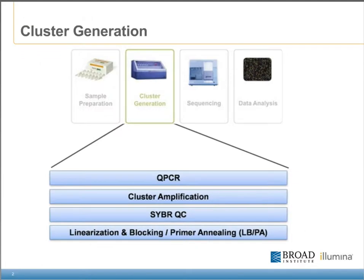Here's the basic overview of our version of the cluster generation portion of the process. Following library construction, we use qPCR to quantify a sample. Once we know the library's concentration, we continue with cluster amplification, where we load the sample onto a flow cell. We then perform a CyberGreen QC step to verify that clusters were generated successfully on the flow cell. If the flow cell looks good, we continue with linearization and blocking and prime renewing, also known as LBPA, which completes the flow cell's preparation for sequencing.